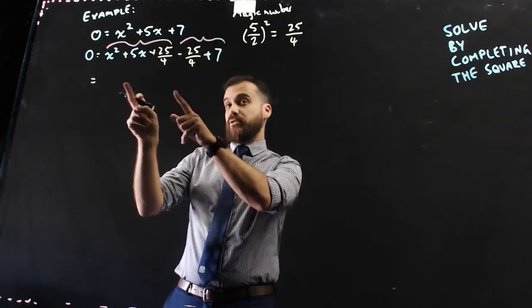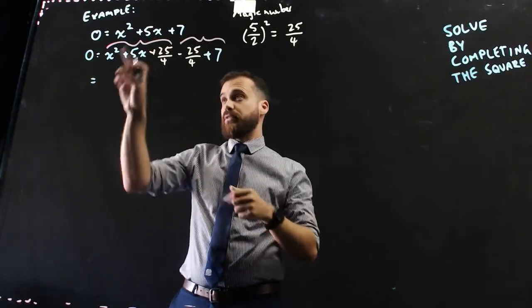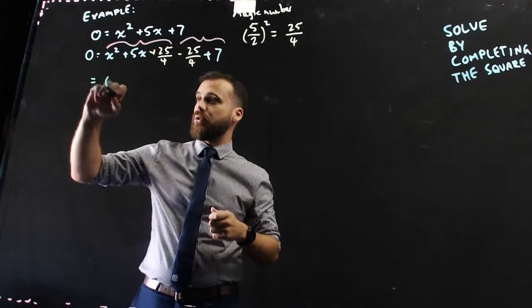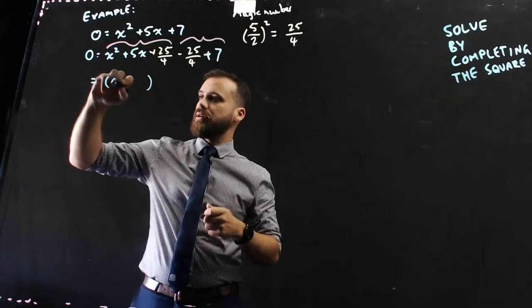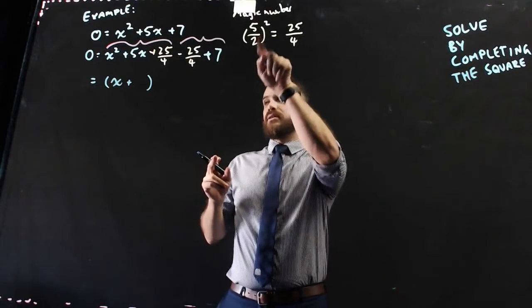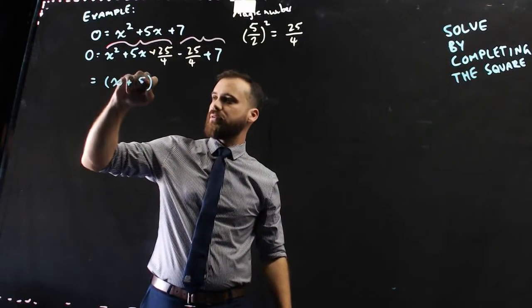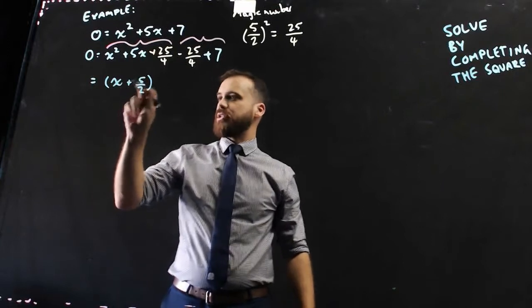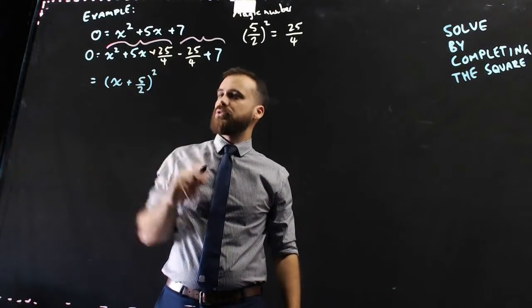Now, this is going to factorize really neatly, because now that I've completed the square, it's going to be a perfect square. So, x plus, and it's going to be that number over there, x plus 5 over 2 squared...